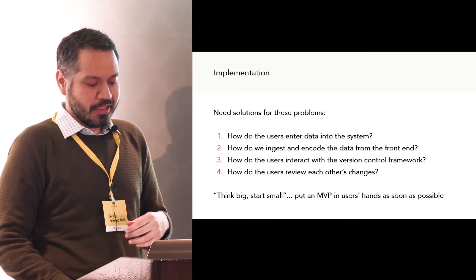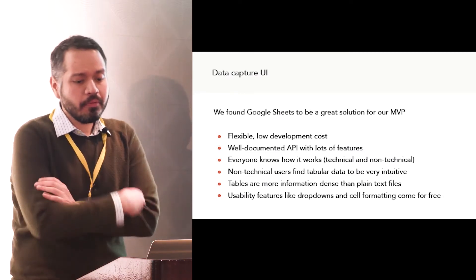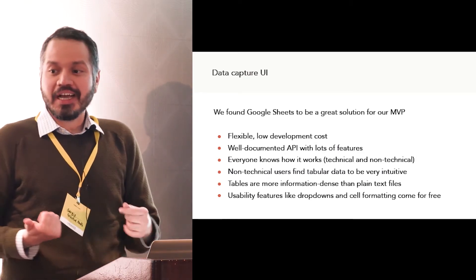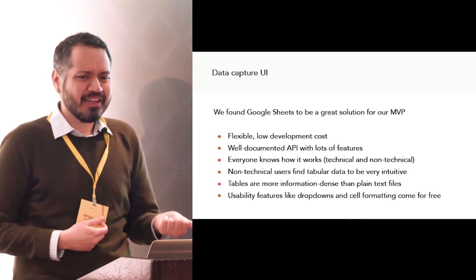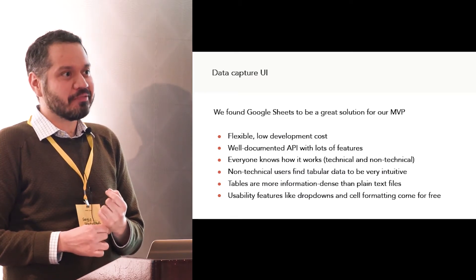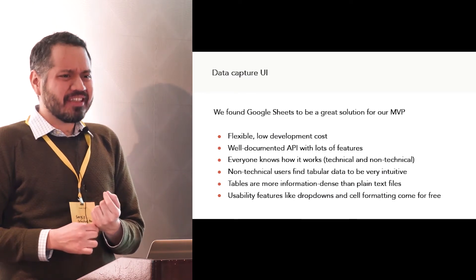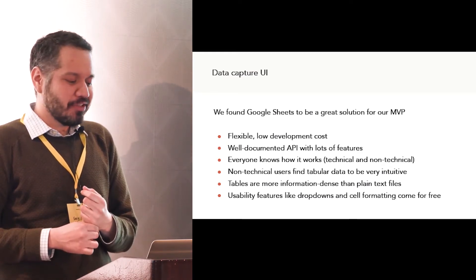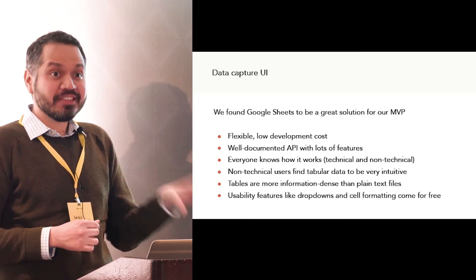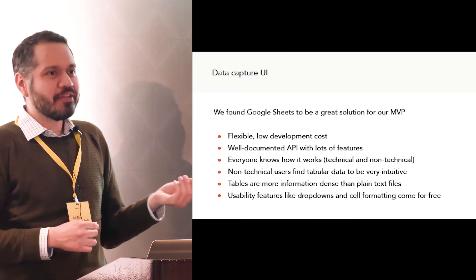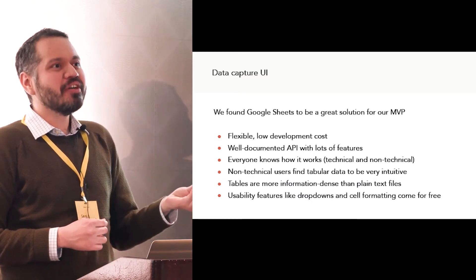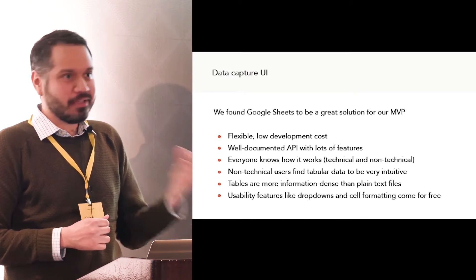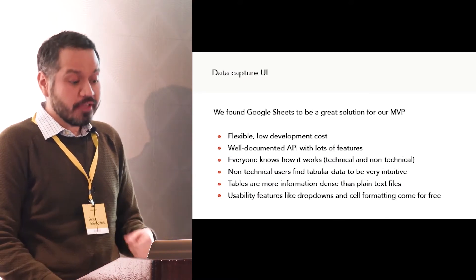For our MVP, Google Sheets was a great place to start for data capture. It has a well-documented API, it's reasonably fast, and pretty much every single one of our subject matter experts uses a spreadsheet program at least once a day. We found that tables of data are extremely intuitive for non-technical folks and are also pretty dense in terms of information. With Google Sheets we can't build the most usable interface, but it has features like cell coloring and dropdown validation that got us pretty far in terms of usability.